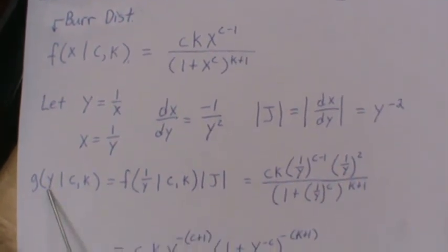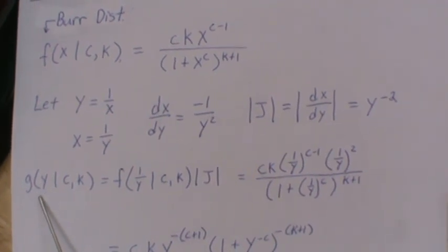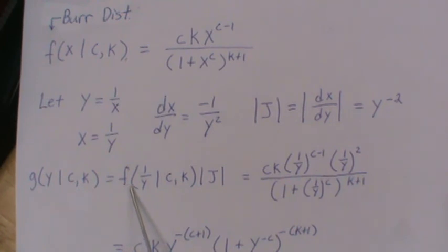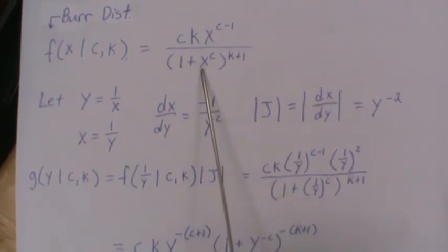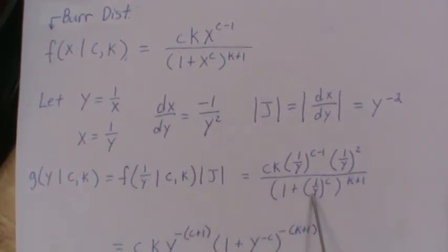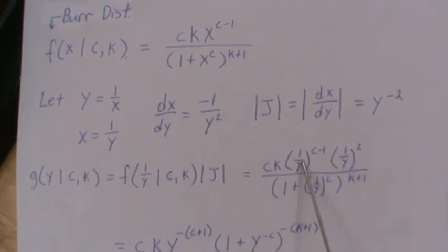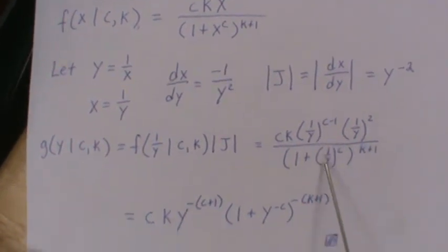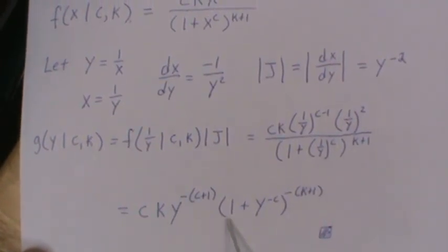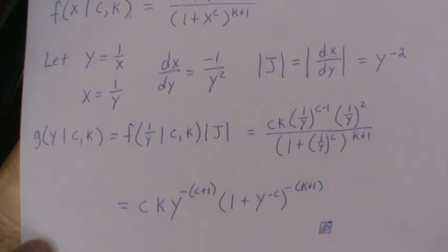So then the density of, or the inverse Burr distribution is this. So you plug in 1 over y, where x was, so that becomes right here and here. And ck times absolute value of the Jacobian, you get this. Then you can combine things and simplify. And then for some reason they like to take this to the top. So this is it. This is the inverse Burr distribution.